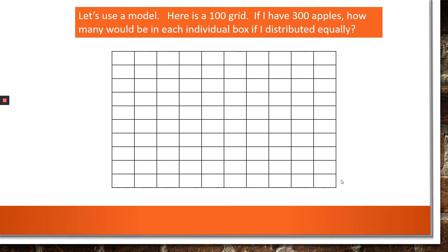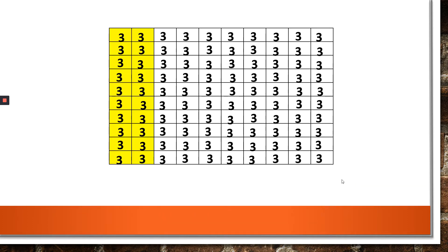We have a hundred grid here, and I have 300 apples. Just imagine that. And we want to distribute them equally into each of the individual boxes. What would I do? I have 300 as a whole. 300 divided into 100 boxes will be, you got it, three. Well, what if I go ahead and put all three in there for you?